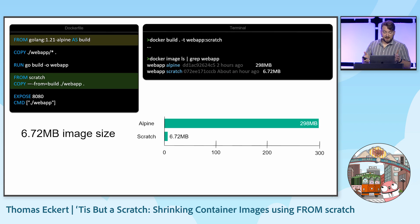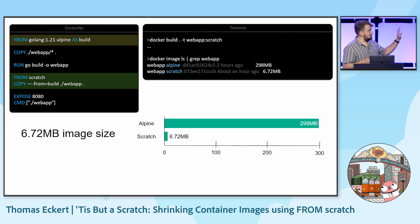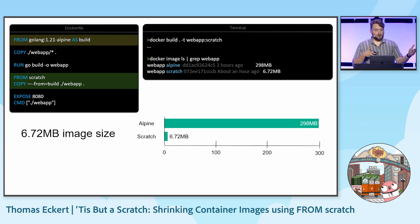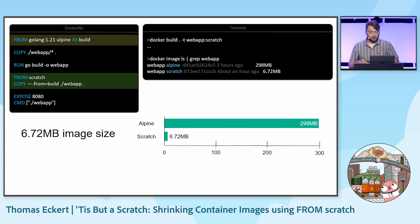First, let's see the effect that this has on our image. Using this Dockerfile, we get an image that is 6.72 megabytes — much smaller than what we had originally. And the new image runs just as well. Because the image is so small, pushing it to an image registry and pulling it down is much faster. You can even do it on conference Wi-Fi.